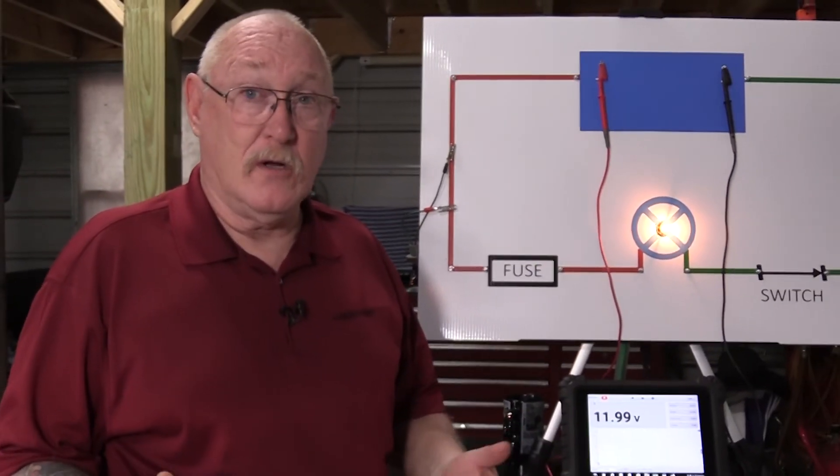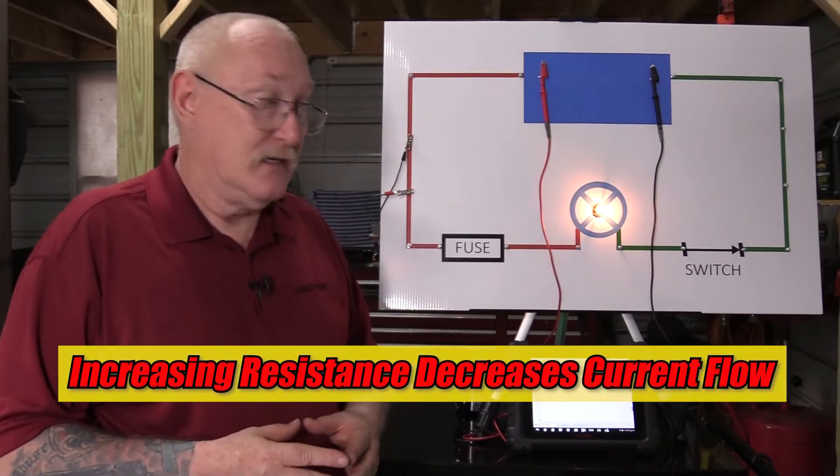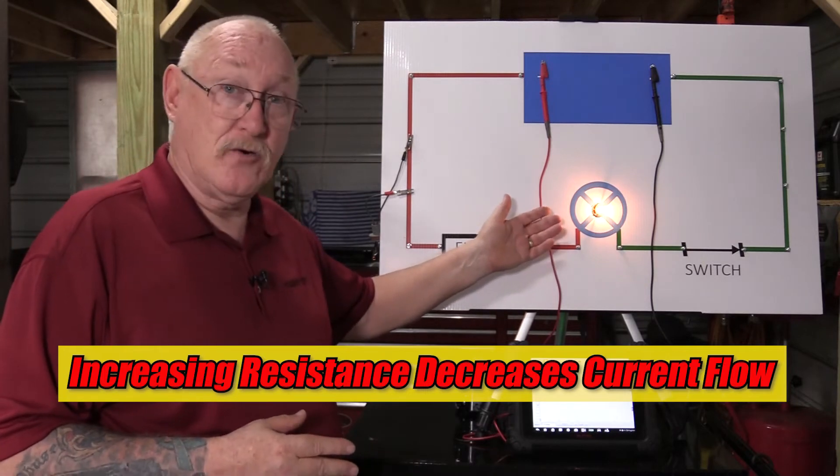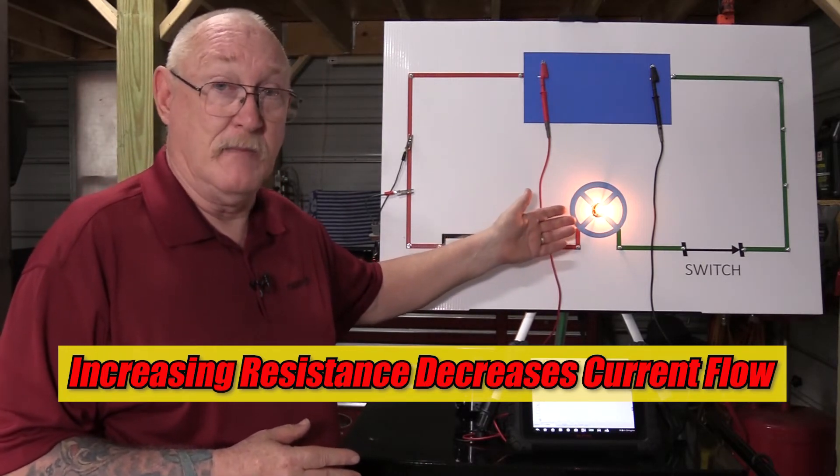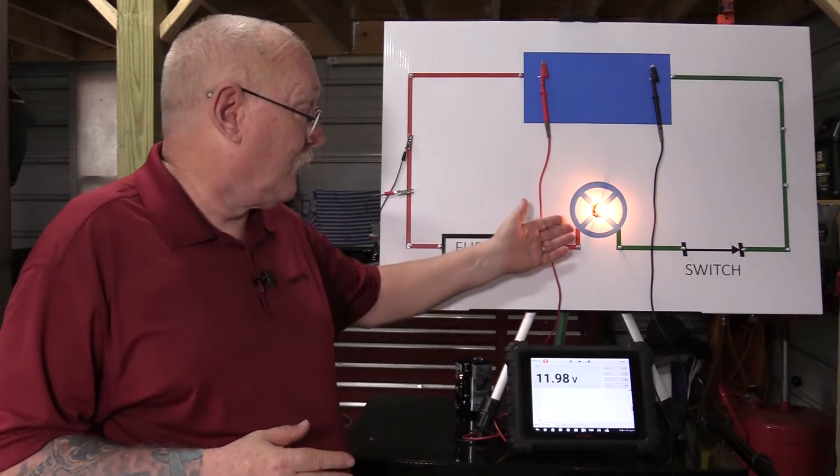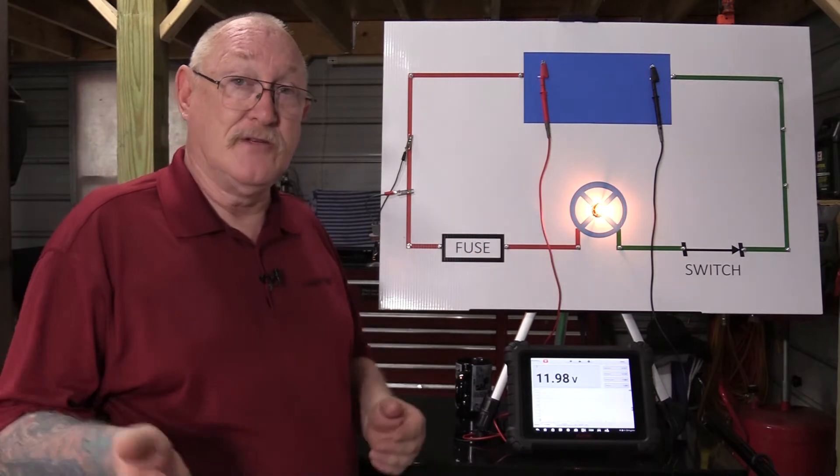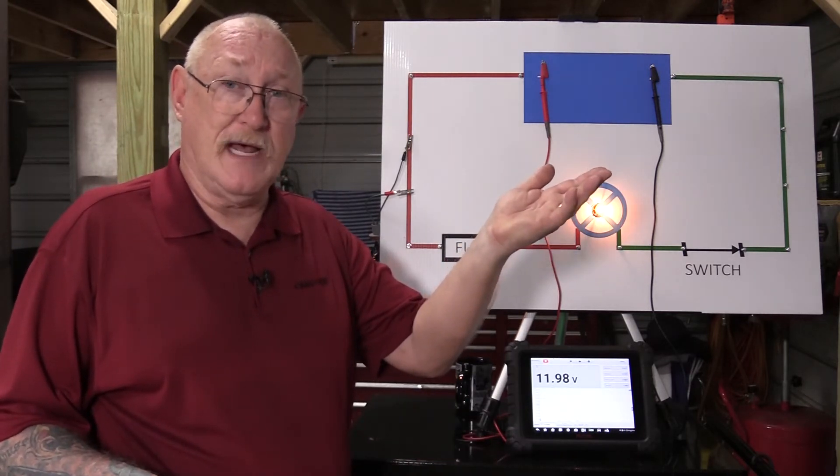What Ohm's law is really trying to teach us here is that if I add resistance, current flow is going to be decreased, which is obvious from the fact that the light is now quite dim. So, Ohm's law is telling me that if I want that current flow to be the same, I either have to decrease resistance or increase the amount of voltage supplied to the circuit.